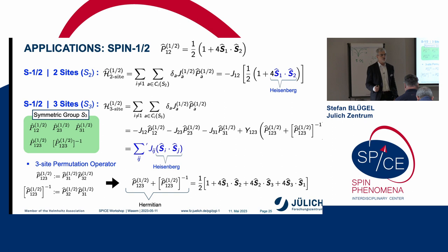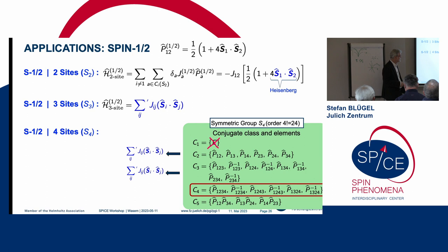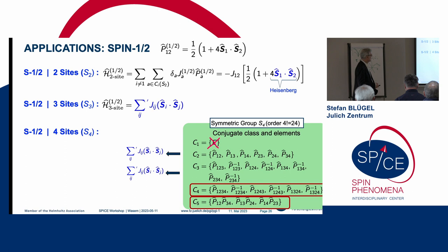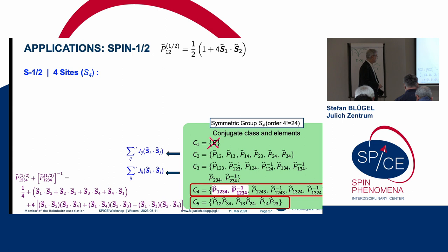Now you go to the symmetric group. You have 24 elements, taking out the first one. These two we have studied already. So these are contributing only to Heisenberg. These two are left. It's the C4, the conjugate class C4, and the conjugate class C5. Now I do this. I write down, for example, again this product here. For your illumination, you see first a Heisenberg term, and then you see something new.